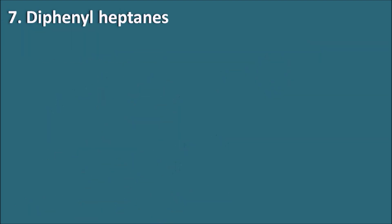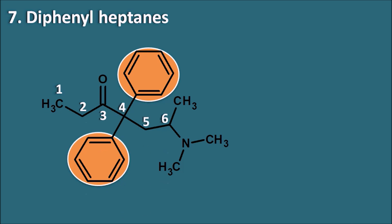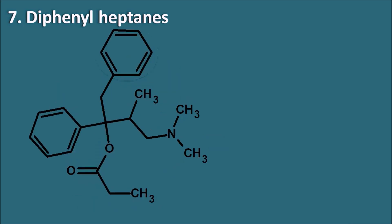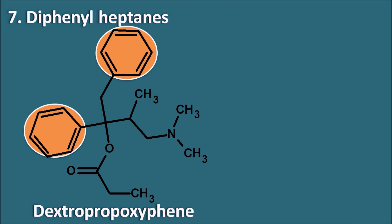Diphenylheptanes have two phenyl groups and a 7-carbon chain. Methadone is a diphenylheptanone derivative with a ketone at the 3rd position, and it has weak mu-agonist activity, making it useful in treatment of opioid addiction. Dextropropoxyphene also has two phenyl groups and is included in this category due to structural similarity, even though it is not strictly a diphenylheptane.